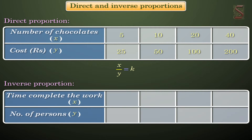Two quantities change in a manner that if one quantity increases, the other quantity decreases in the same proportion, or vice versa. This is called inverse proportion.